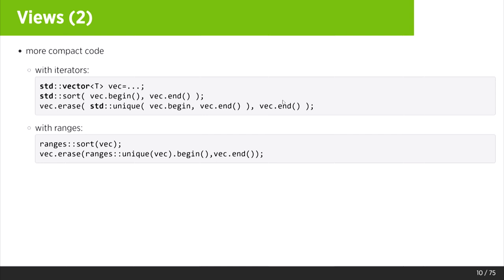With ranges, you can write that a whole lot more compactly. Now you have ranges::sort, then you do ranges::unique, which returns the range of things that are to be erased. You take the begin of that and go to the end of your vector — that's what you have to erase. But in that ranges code, there is a bug or a pitfall.